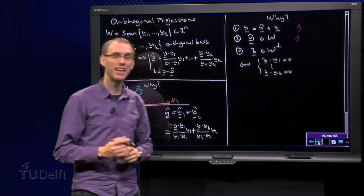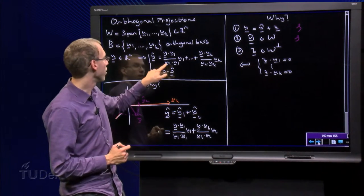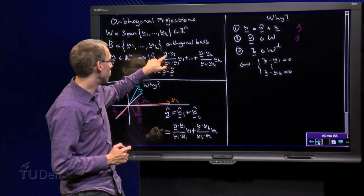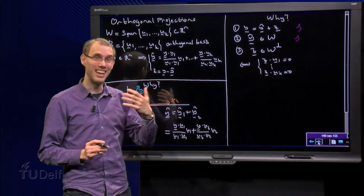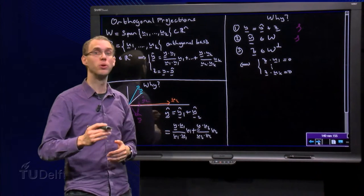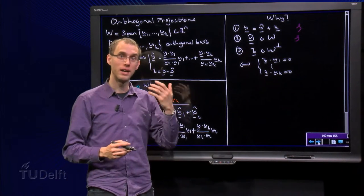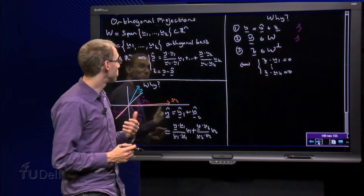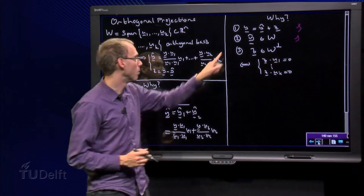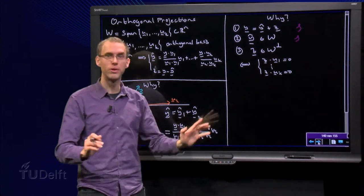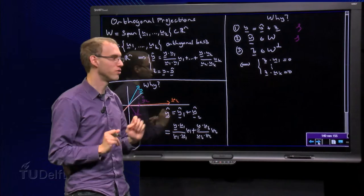We need y-hat to be in w. However, as we see, y-hat is a combination of u1 to uk with some weights. So y-hat is a linear combination of u1 to uk. So y-hat is in the span of u1 to uk, but that's exactly w. So y-hat in w is also quite immediately clear that that's satisfied.